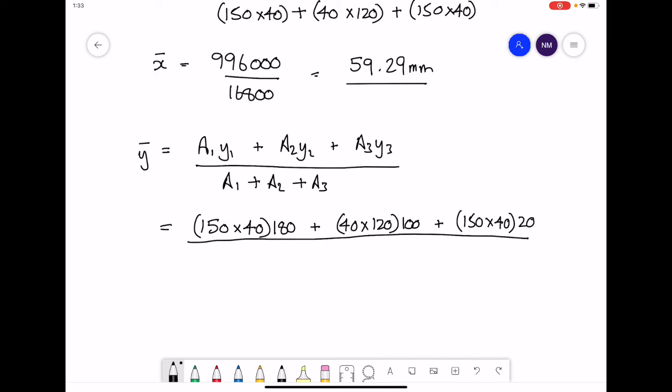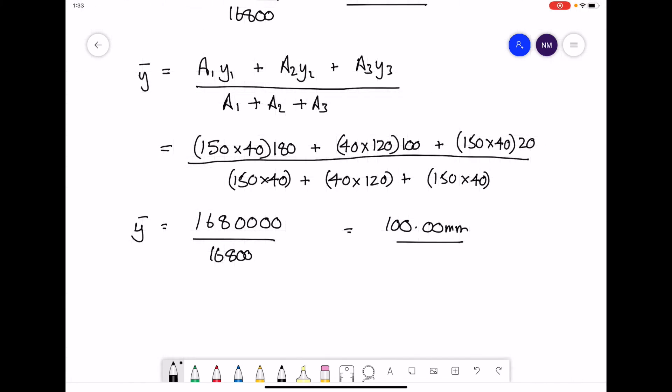Divide that by the total cross-sectional area. 150 by 40, plus 40 by 120, and another 150 by 40. Work that out with your calculator, and you get 16,800. So that's 1.68 million. Divide that by 16,800, and you get a value of 100 millimeters directly. x-bar is a value of 59.29 millimeters, and y-bar is a value of 100 millimeters.